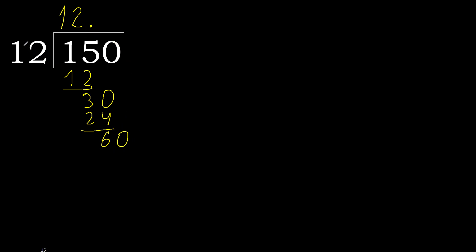Bring down 60. 12 multiplied by 6 is greater, multiply by 5 is 60. 60 is not greater, ok subtract: 0, 0.